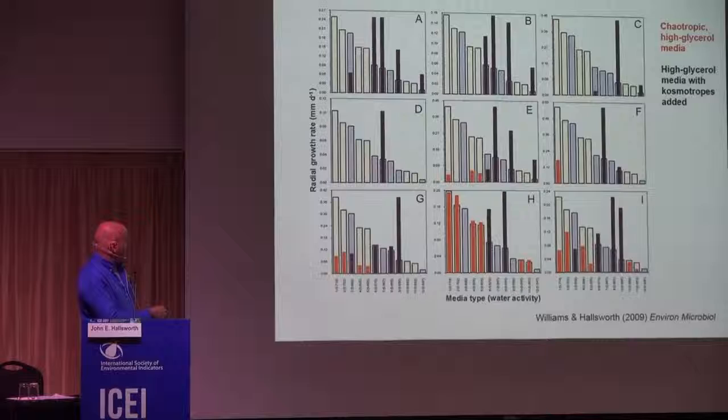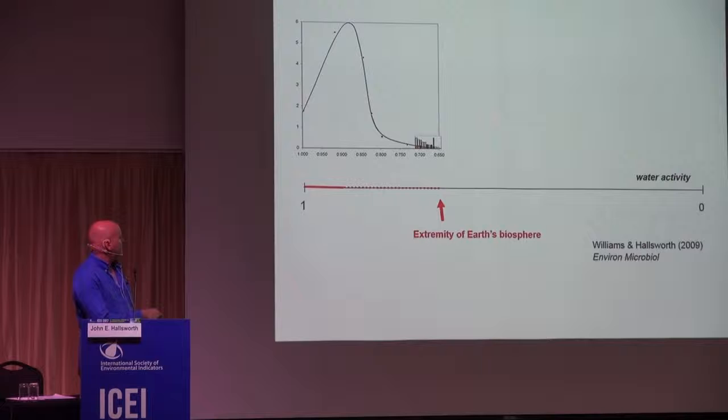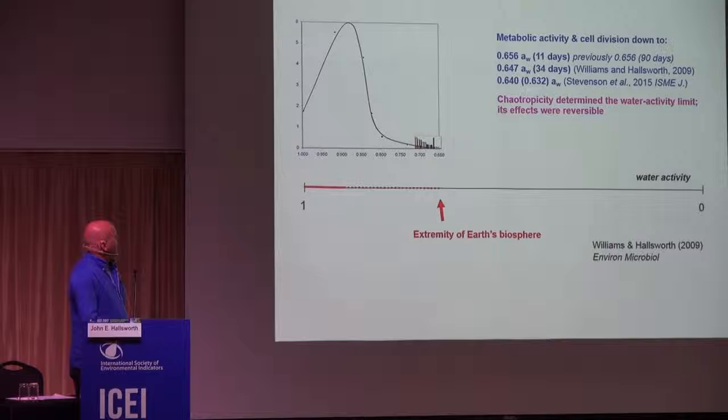Even though I showed those graphs in relation to water activity, I want to remind you this is the very edge of the growth window of these microbes. Water activity of one is equivalent to pure water, becoming more stressful in this direction. This is the growth optimum of this extreme xerophile. If I put one of these histograms in context, this represents the very limit of life on earth — the extremity of life on earth — and indeed life within food systems. We found that chaotropicity actually determined the water activity limit, not water activity per se, and its effects were reversible.